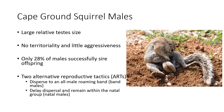Males are primarily thought to invest in sperm competition due to their large relative testes size. Additionally, there is no clear evidence of pre-copulatory selection, as there is no territoriality and little aggressiveness between one another. Nearly all reproductive males will have a chance to mate with a female during the year, but despite this, only approximately 28% of males will successfully sire offspring, leading to a large reproductive skew.